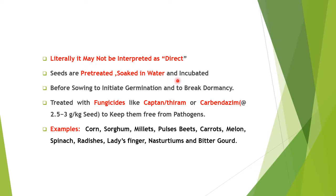Although the term 'direct seeding' implies putting seeds directly in soil, there is often a pre-treatment involved. Seeds are soaked in water or incubated to overcome dormancy and initiate germination. Seeds are also treated with fungicides like Captan or Carbendazim at the rate of 2.5 to 3 grams per kg of seed to keep them free from pathogens.